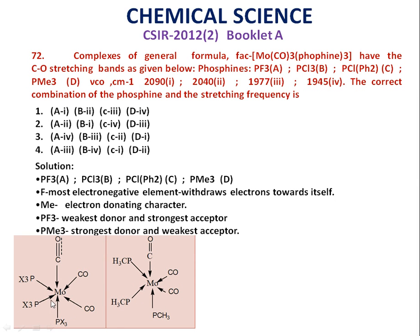Here I have shown two structures: the general formula of tricarbonyl-triphosphine-molybdenum complexes, and the tricarbonyl-trimethylphosphine-molybdenum complex specifically. PMe₃ is the strongest donor, so it donates electrons to the central metal atom more easily, and the central metal atom experiences more electron density around it. Therefore, it is most able to transfer electrons to the antibonding orbital of the carbonyl group.